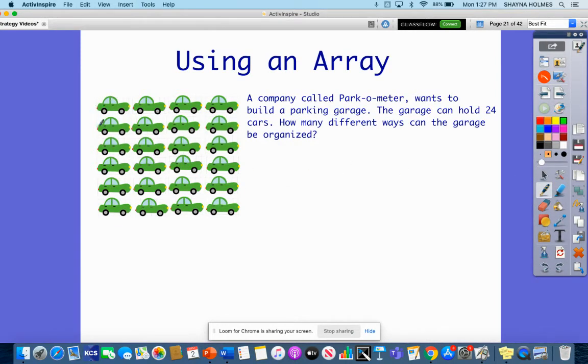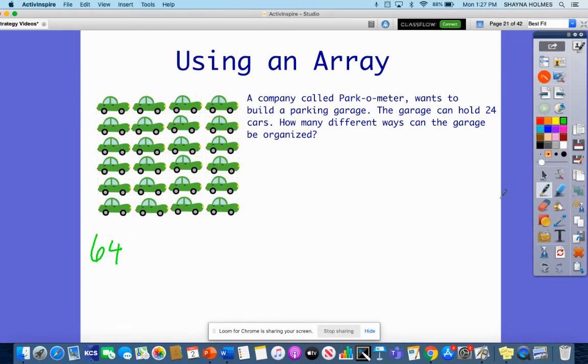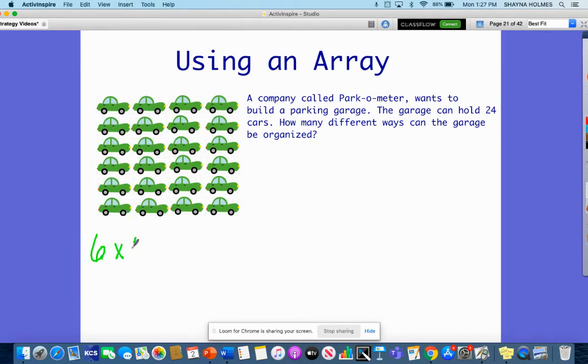We have one, two, three, four, five, six rows, and one, two, three, four columns. So I have six times four is 24. Six and four are a factor of 24.